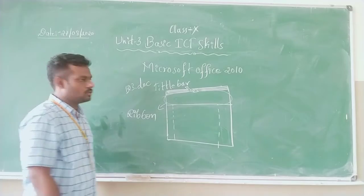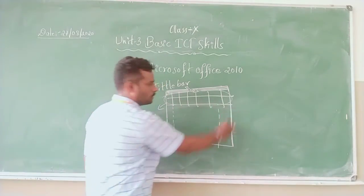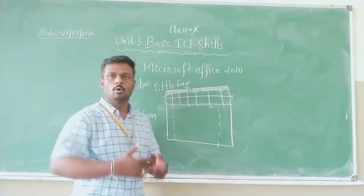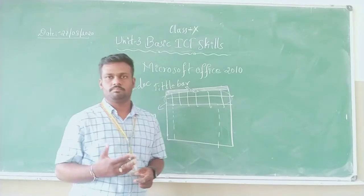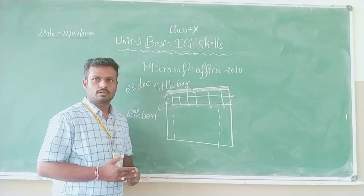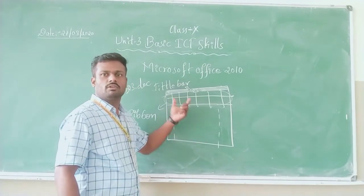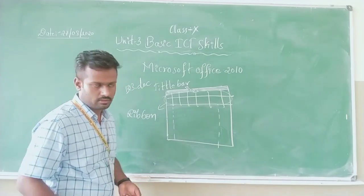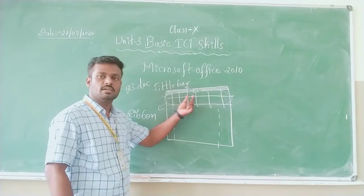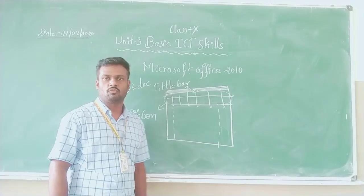We have different kinds of tabs such as the Home tab, Insert tab, Page Layout tab, References tab, Review tab, View tab, and Help tab. In the next class we will discuss each and every tab and the other elements of the Microsoft Word interface.